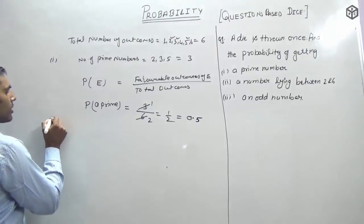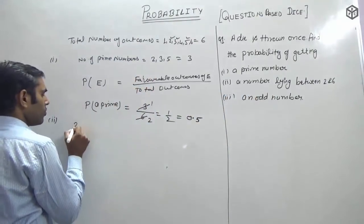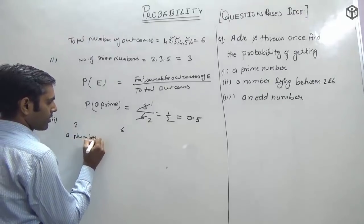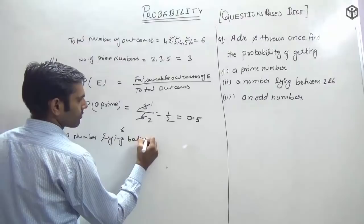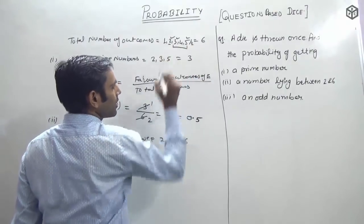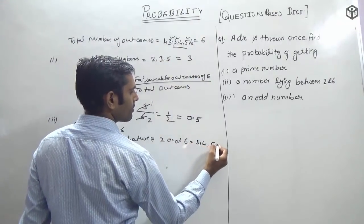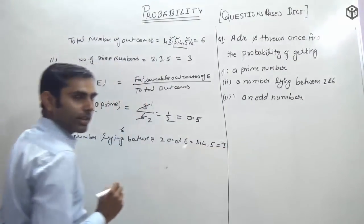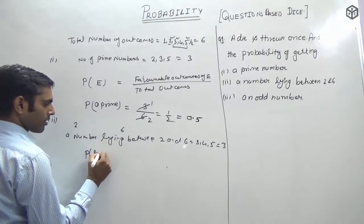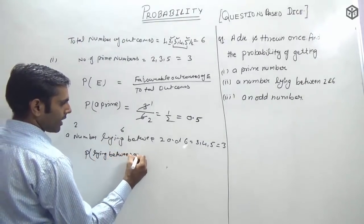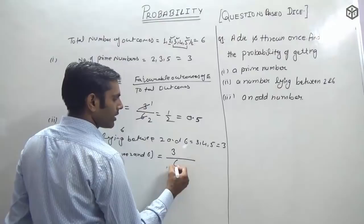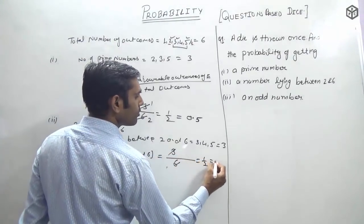Now for the second part: a number lying between 2 and 6. Looking between 2 and 6, the numbers that come are 3, 4, and 5 — so 3 favorable outcomes. P(between 2 and 6) = 3/6 = 1/2 = 0.5.